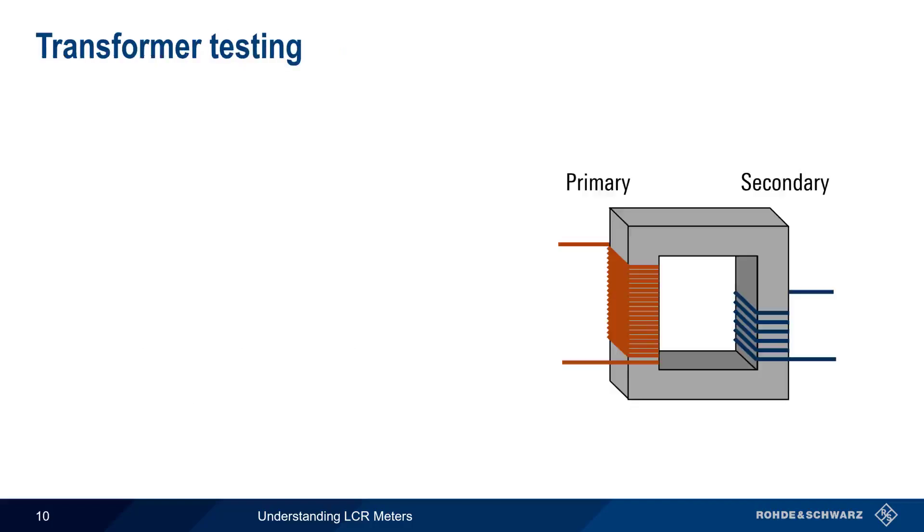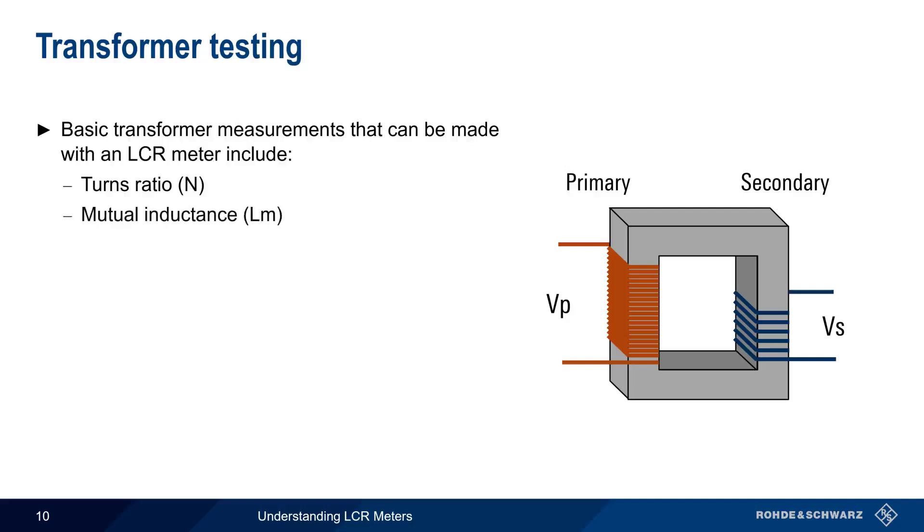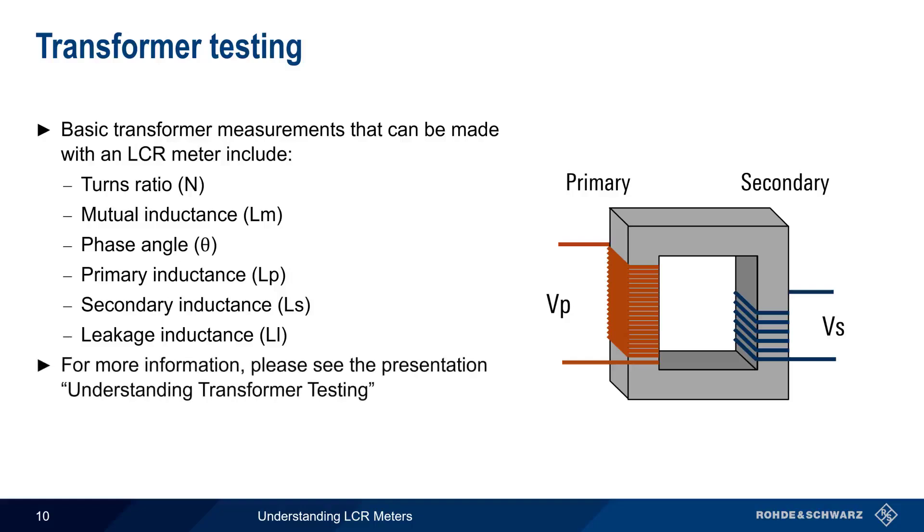We mentioned earlier that LCR meters can also be used to make various transformer measurements. These include the turns ratio N, which can be calculated from the ratio of primary voltage to secondary voltage. Another measurement is mutual inductance, which is the change in voltage in one winding, or coil, in response to a change in current in the other coil. The phase angle between the signals in the two coils can also be determined. In addition to measuring the inductance of the primary and secondary coils, LCR meters can also be used to find the leakage inductance, which quantifies the imperfect magnetic coupling between these two coils. We don't have time to go into the details of these parameters here, so please see the separate presentation, understanding transformer testing, if you'd like to learn more about these and other transformer measurements.